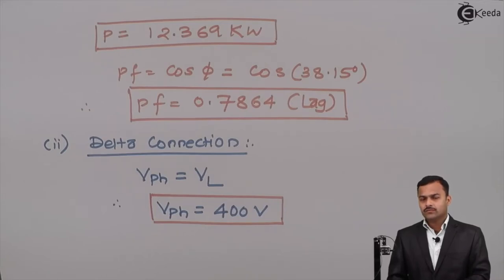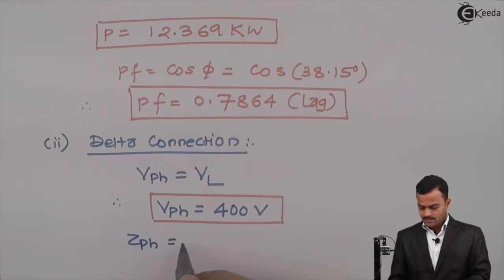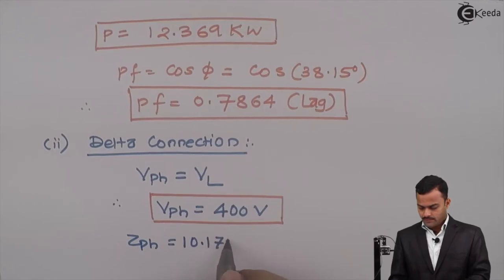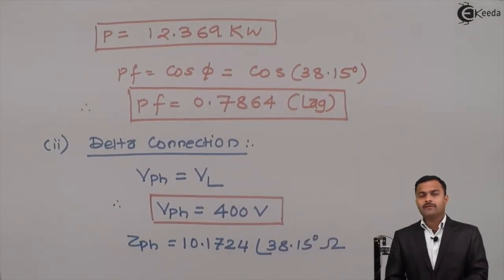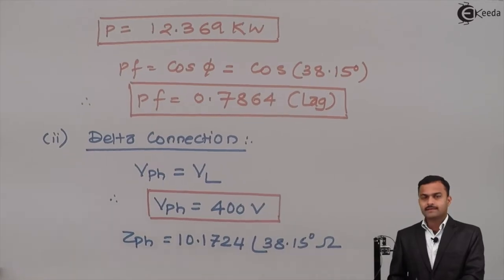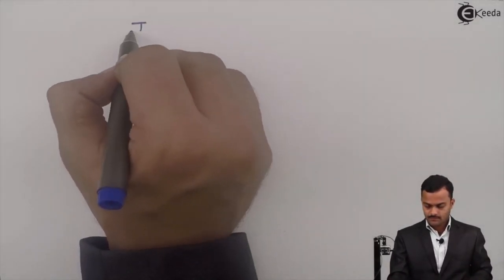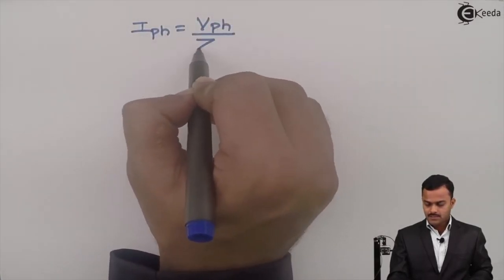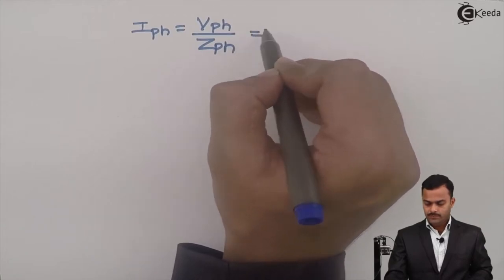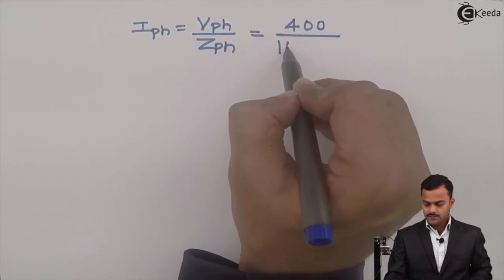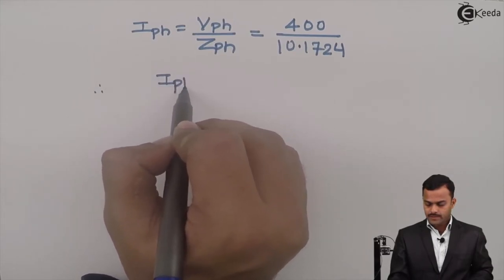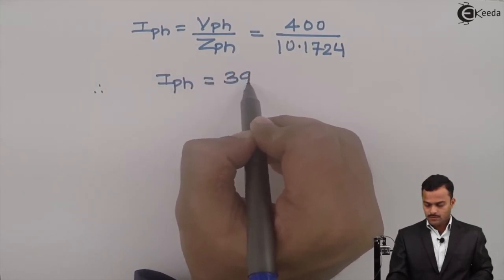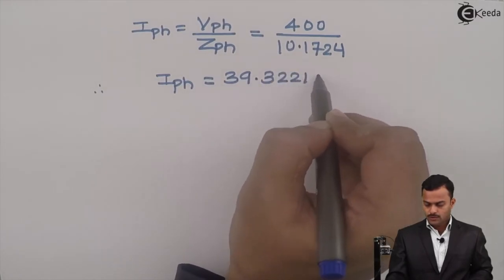Now Zph will also remain the same, so Zph is 10.1724 at an angle of 38.15 degrees. We need Zph to calculate Iph. So Iph will be Vph divided by Zph, which is 400 divided by 10.1724. If we solve, you will get phase current equal to 39.3221 amperes.